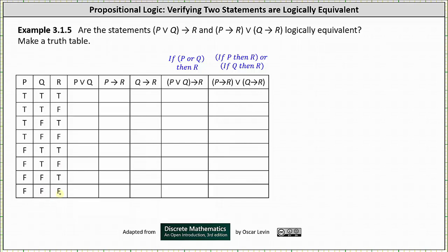For the next column, p or q is false only when p is false and q is false. Notice p is false and q is false in row seven and row eight, which means p or q is false in rows seven and eight. Everywhere else, p or q is true. The column is true, true, true, true, true, true, false, false.